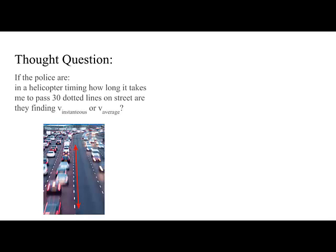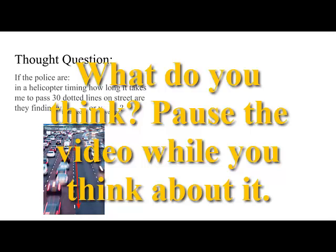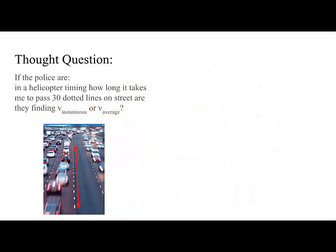Here's a thought question. Mr. Fay is in his Ferrari, and if the police are in a helicopter timing how long it takes me to go through 30 of the little dots in the middle of the road, what kind of velocity are they looking at? Instantaneous or average velocity? If you said average, you'd be right. The police are looking at me over a long period of time, a long distance. They aren't really looking at how much I speed up or slow down in the middle. They're just looking at here he is at one point, here he is at the next.